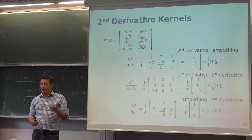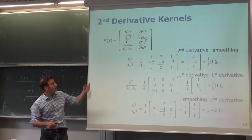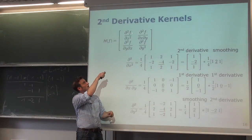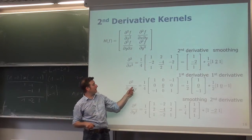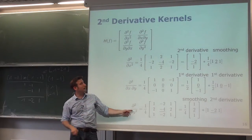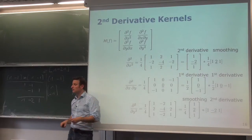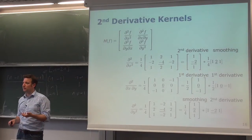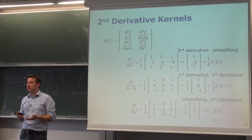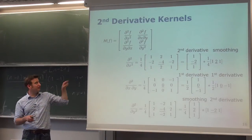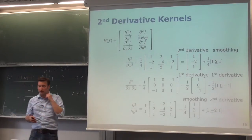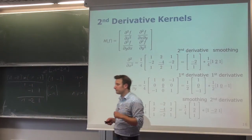So to compute the Hessian of an input image, we apply three different kernels, each yielding one output image. For every pixel, we obtain three values corresponding to the three distinct Hessian elements. This means one input image produces three output images — one per Hessian component.